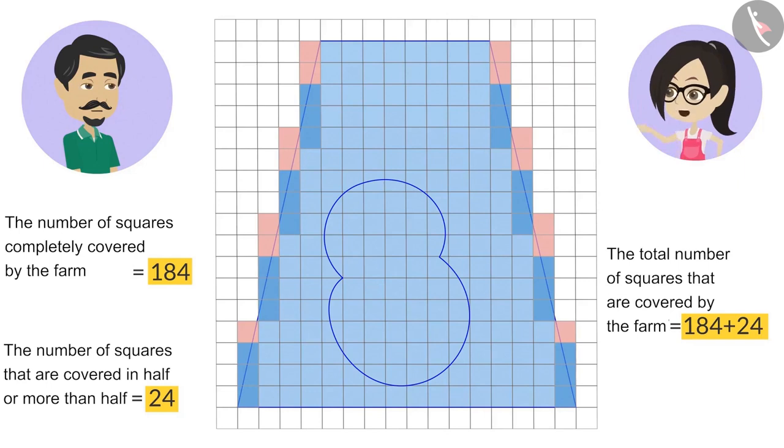That means the farm has covered almost 184 plus 24 squares. Therefore, this farm covered almost 208 squares.